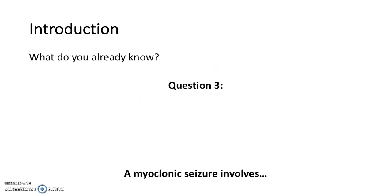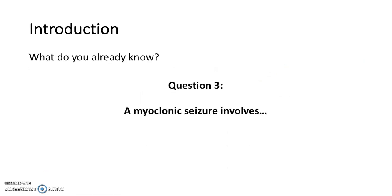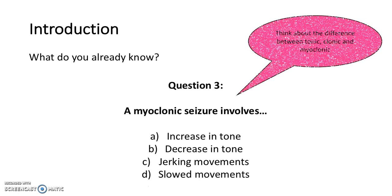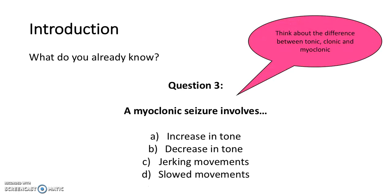Question 3: a myoclonic seizure involves an increasing tone, a decreasing tone, jerking movements, or slowed movements? Think about the difference between tonic, clonic and myoclonic. The answer is C, jerking movements, because a myoclonic seizure involves the muscles.